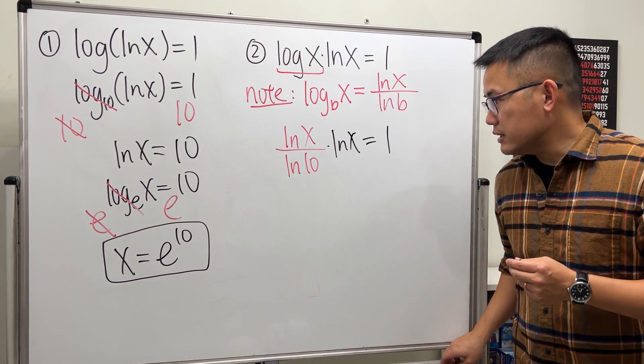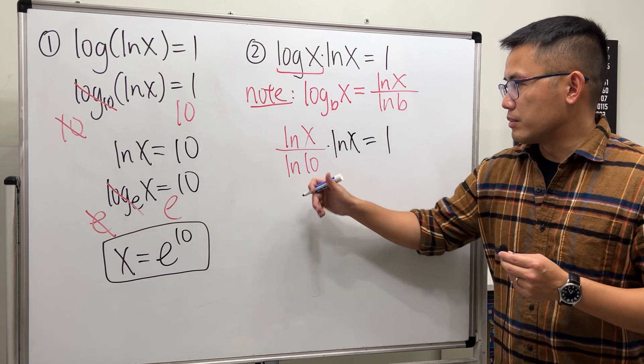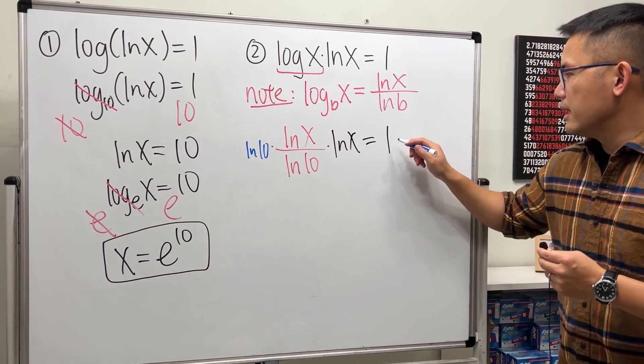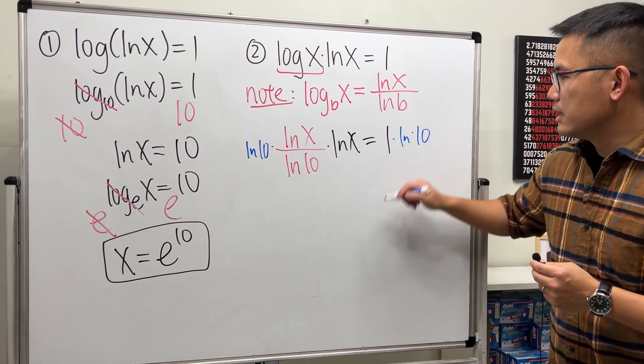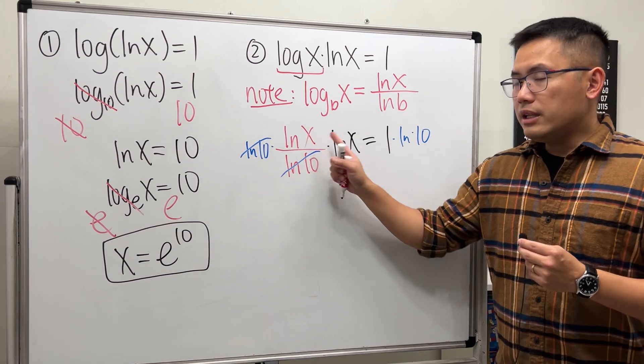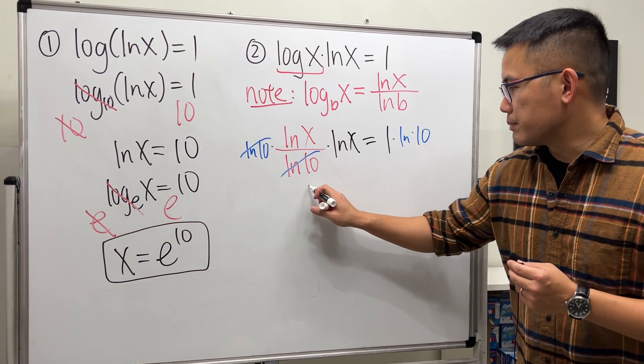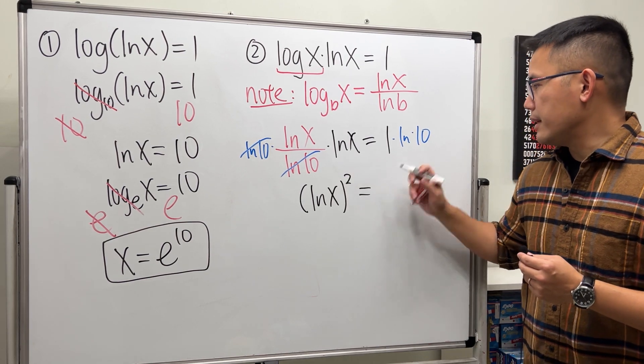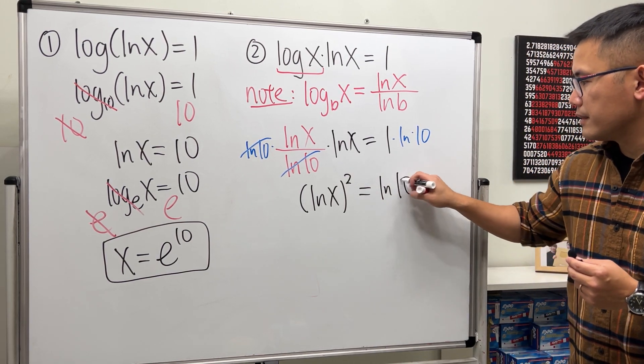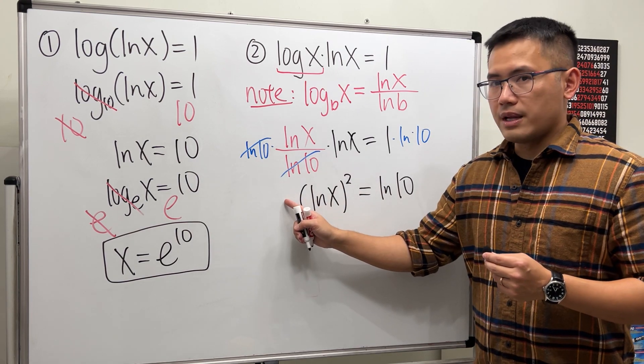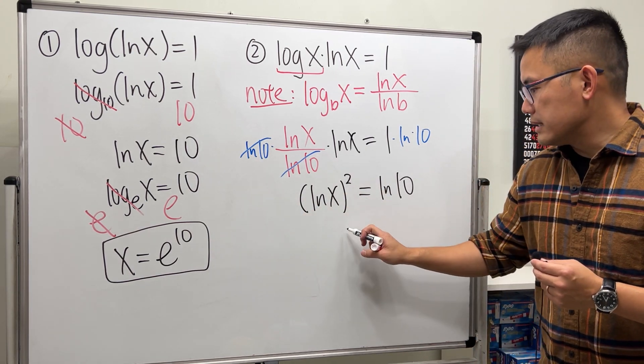Have a look. This time now we can multiply the ln 10 on both sides first because that's just like a number. So let's go ahead and do that, multiply that, and then let's also multiply that so that this and that cancel. And then ln x times ln x is of course just ln x to the second power and that's equal to ln 10. Be really careful though, you cannot put the 2 to the front because this right here is not the same as ln of x squared.